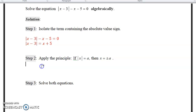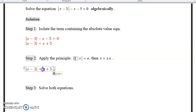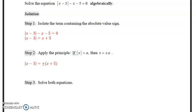And now, step 2, we apply the principle. So |x - 3| is going to equal, and then this whole thing has to go in brackets because there's more than one term. So it's going to be the plus or minus (x + 5).